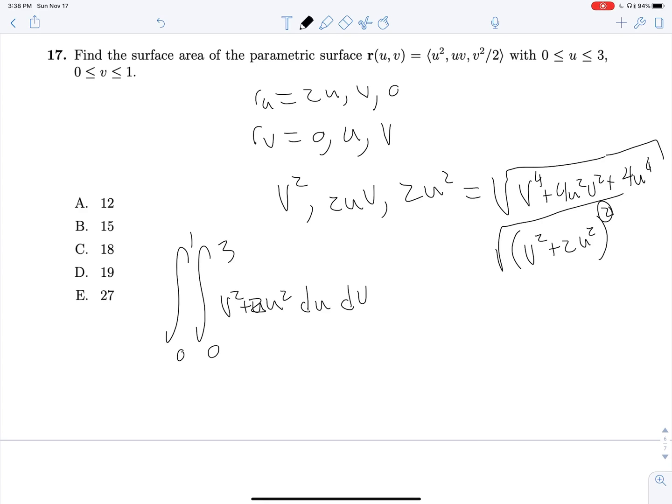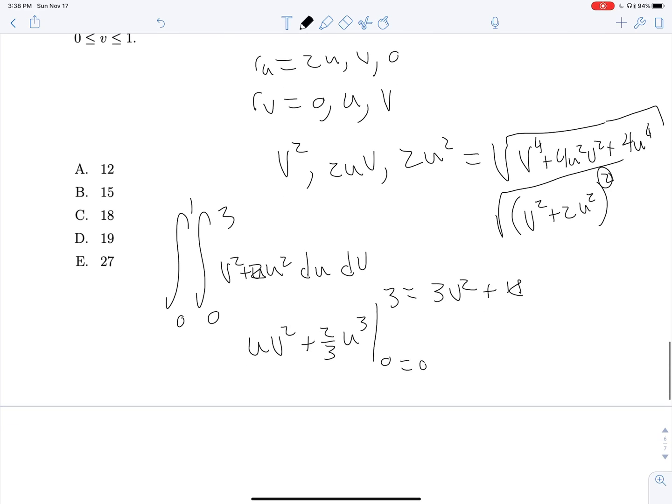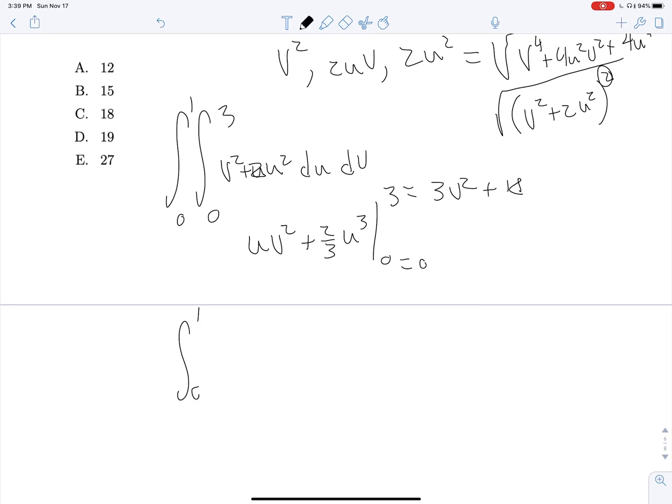And now we can integrate. Integrating with respect to U, we're going to get U V squared plus two thirds U cubed evaluated on zero to three. And evaluating, we will get 3V squared plus U cubed is going to, 3 cubed is going to be 27 divided by 3 is 9 times 2 is 18. So now our final little integral from zero to 1, 3V squared plus 18 DV, this will be V cubed plus 18V on zero to one, which is 19, and we're done.